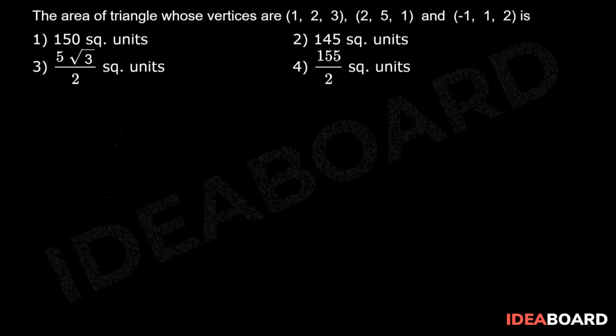The area of triangle whose vertices are (1, 2, 3), (2, 5, 1) and (-1, 1, 2) is.